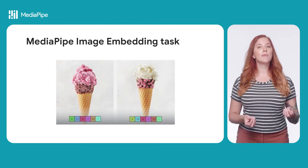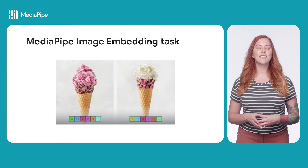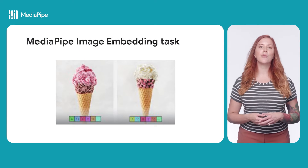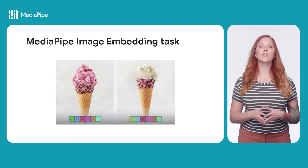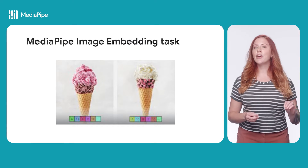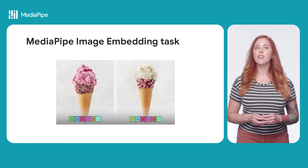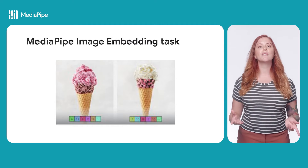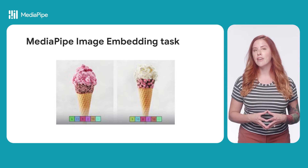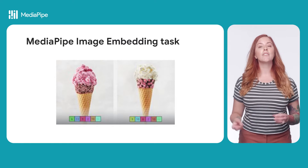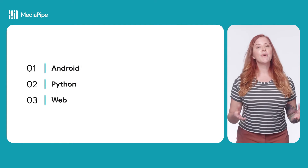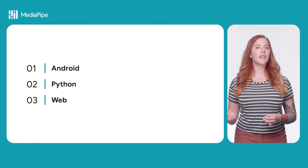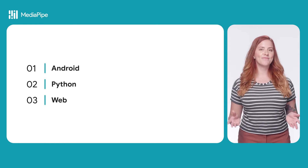The MediaPipe Solutions Image Embedding task operates on image data with a machine learning model as static data or a continuous stream, and outputs a numeric representation of the image data as a list of high-dimensional feature vectors, also known as embedding vectors, in either floating point or quantized form. There are APIs available for Android, Python, the web, and more to come.